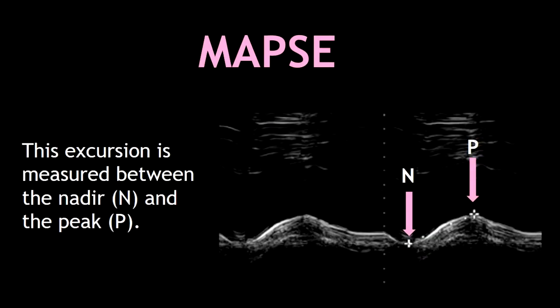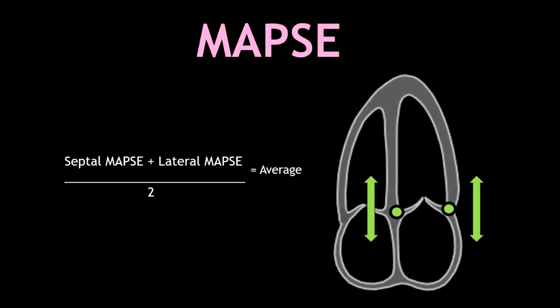This excursion is the distance we measure between the nadir, which is the lowest point, and the peak, which is the highest point. You can measure the excursion from just one annulus only, or you can measure both septal and lateral mitral valve annulus and obtain an average.